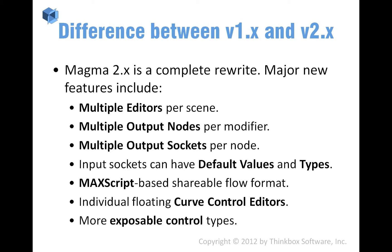The input and output sockets of nodes have changed. In version 1.6 you had only one output socket per node, and now you can have multiple. The input sockets can now have default values and custom types for those default values. I'm going to show you more about this a little bit later.